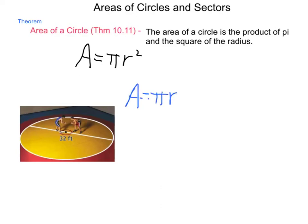Well, we can compute this using our formula, A equals pi r squared. If the diameter is 32 feet, then the radius would be simply 16 feet. So, A equals pi times 16 squared. 16 squared is 256.